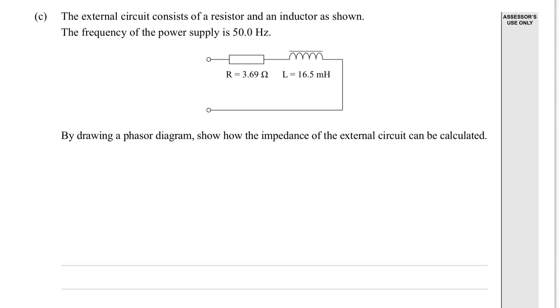The external circuit consists of a resistor and inductor, shown here. The frequency of the power supply is at 50 Hz. So you would imagine 50 Hz on that side. And then you've got the one transformer, and then the other transformer.